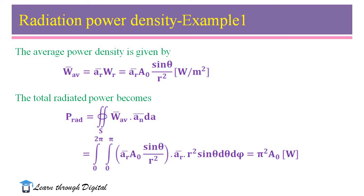I consider an example of how to calculate the radiated power from a given radiation power density. The given average power density is W_avg equals A₀ sinθ / r² â_r, with units of watts per square meter. From this we have to calculate the total radiated power. P_rad equals the closed surface integral of W_avg dot â_n ds. We integrate this average power density with respect to θ and φ, with limits for θ from 0 to π and for φ from 0 to 2π. After evaluating this integration, we get P_rad equals π² A₀ watts.